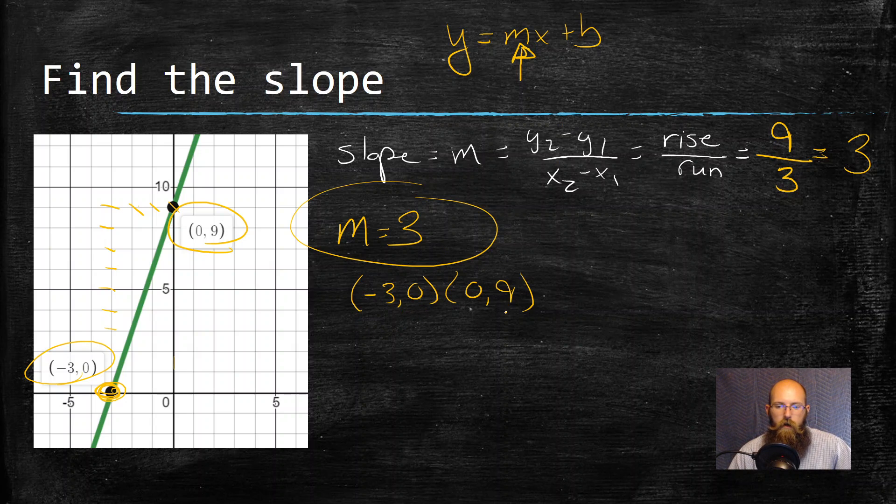So I have my change in y. So I take this y, it's my y two, subtract it from my y one. So nine minus zero. Then I have x two minus x one. So I have zero minus a negative three. Nine minus zero gets me nine, zero minus a negative three. See, there's two negatives, they become positives.